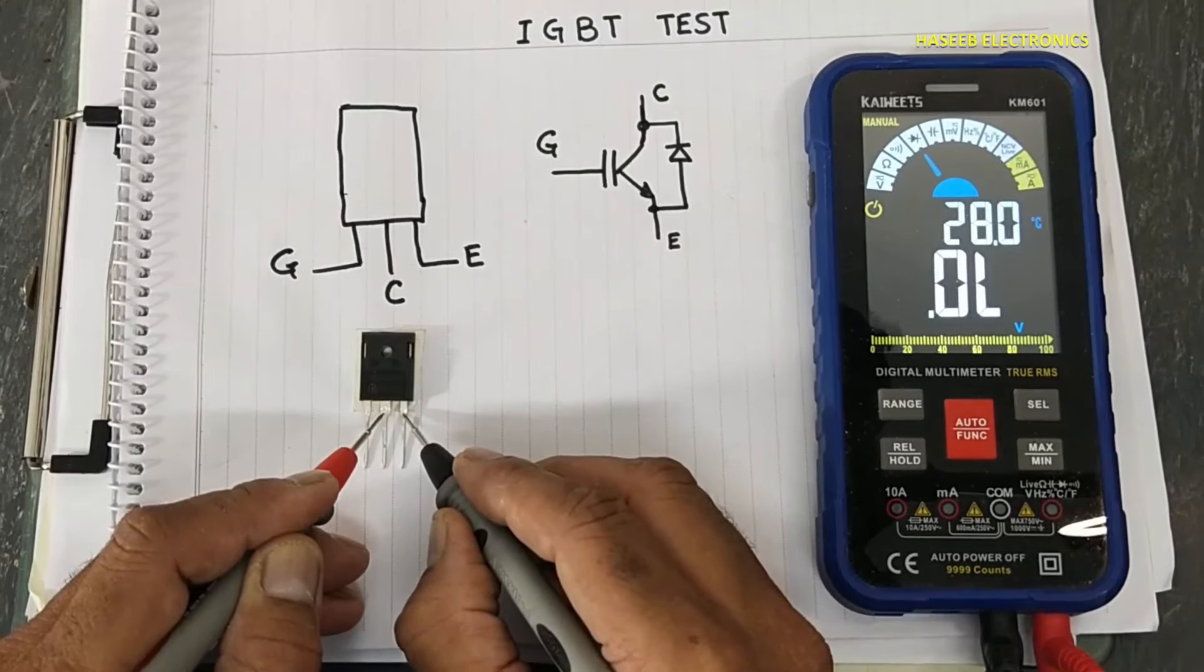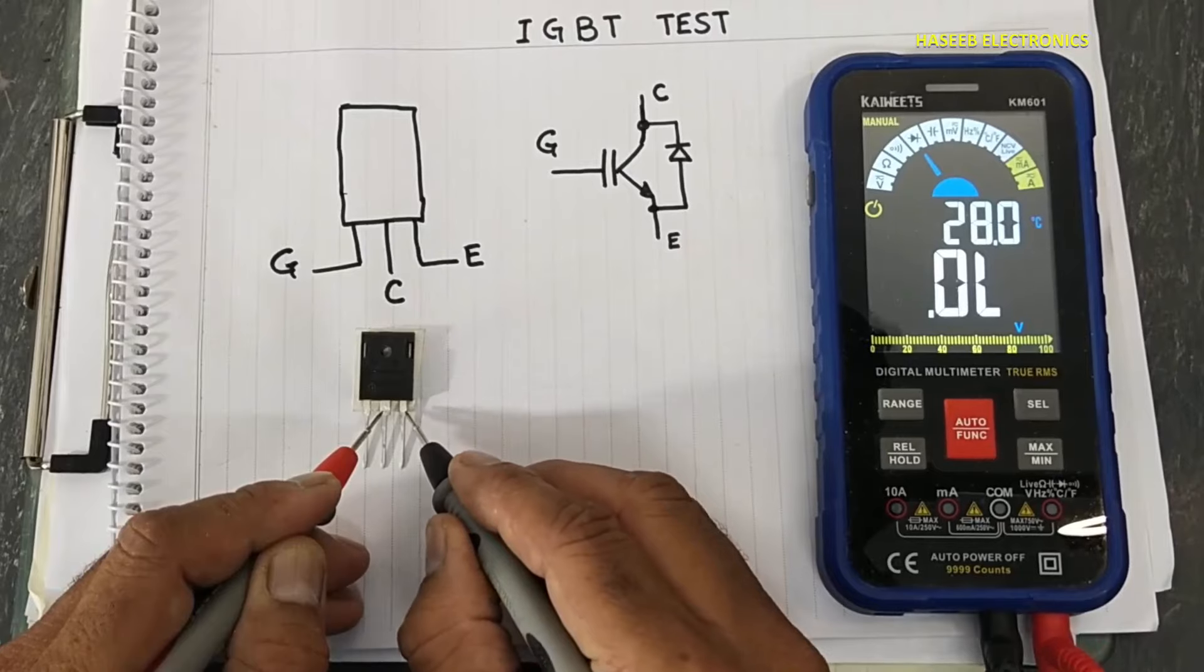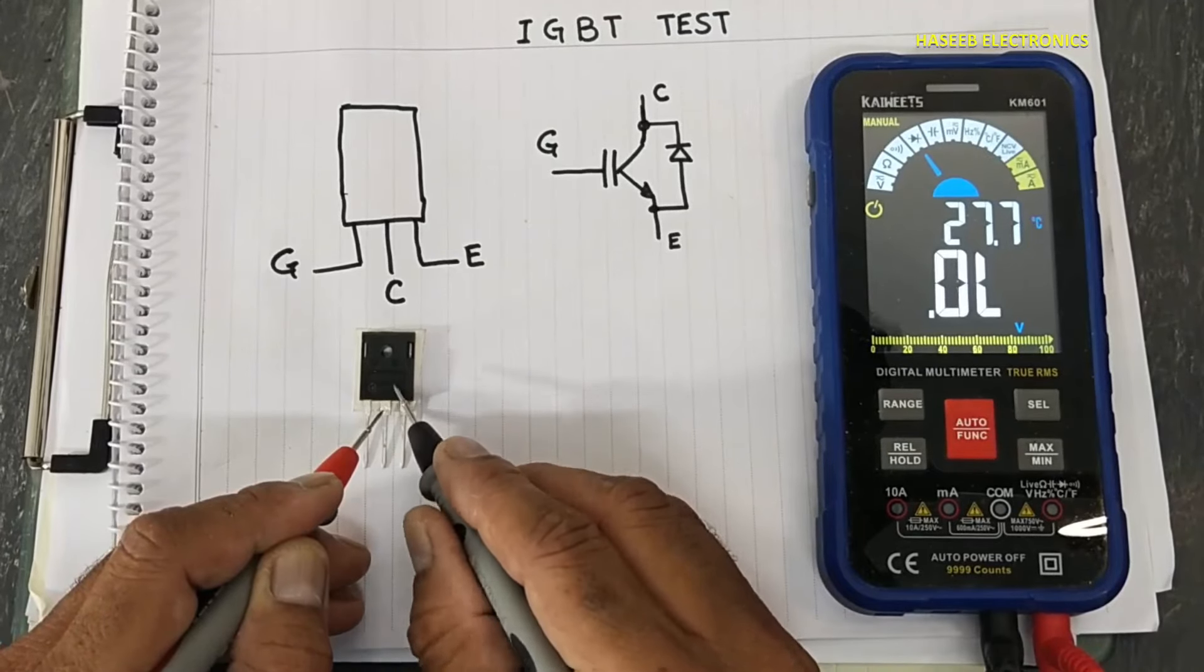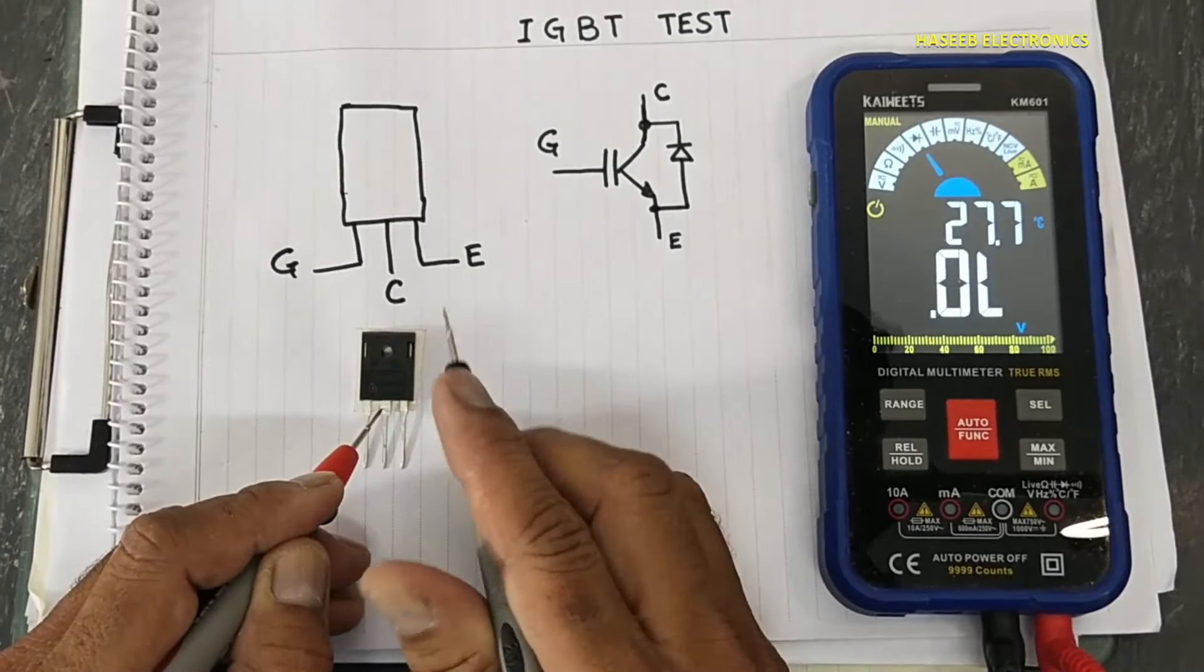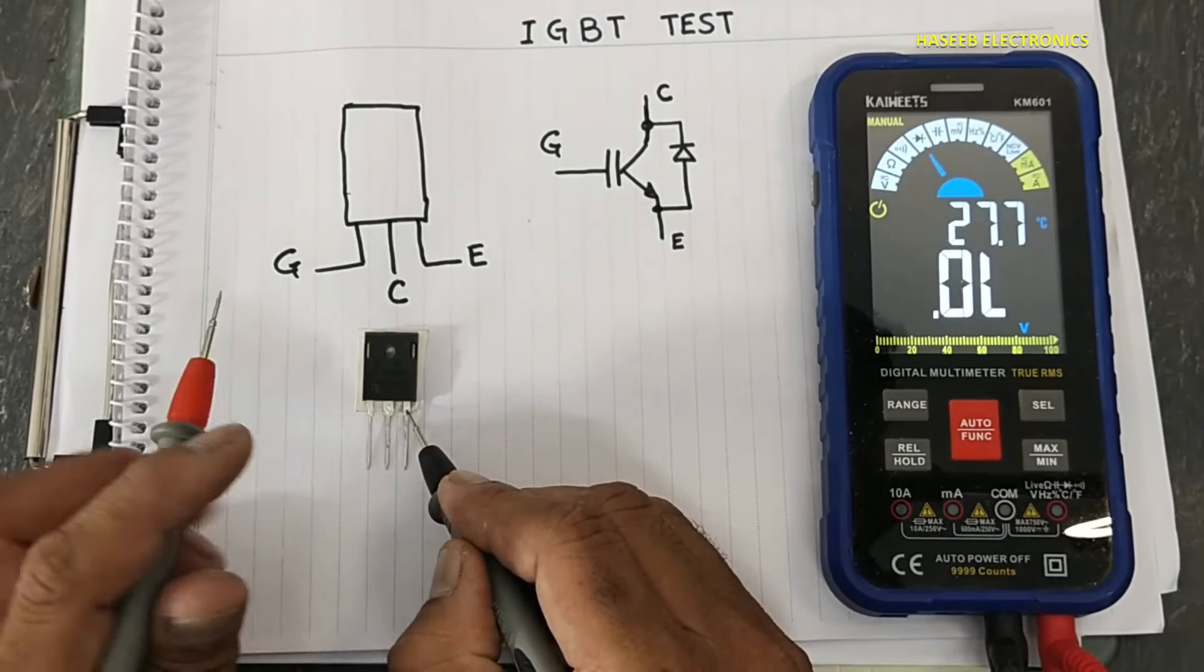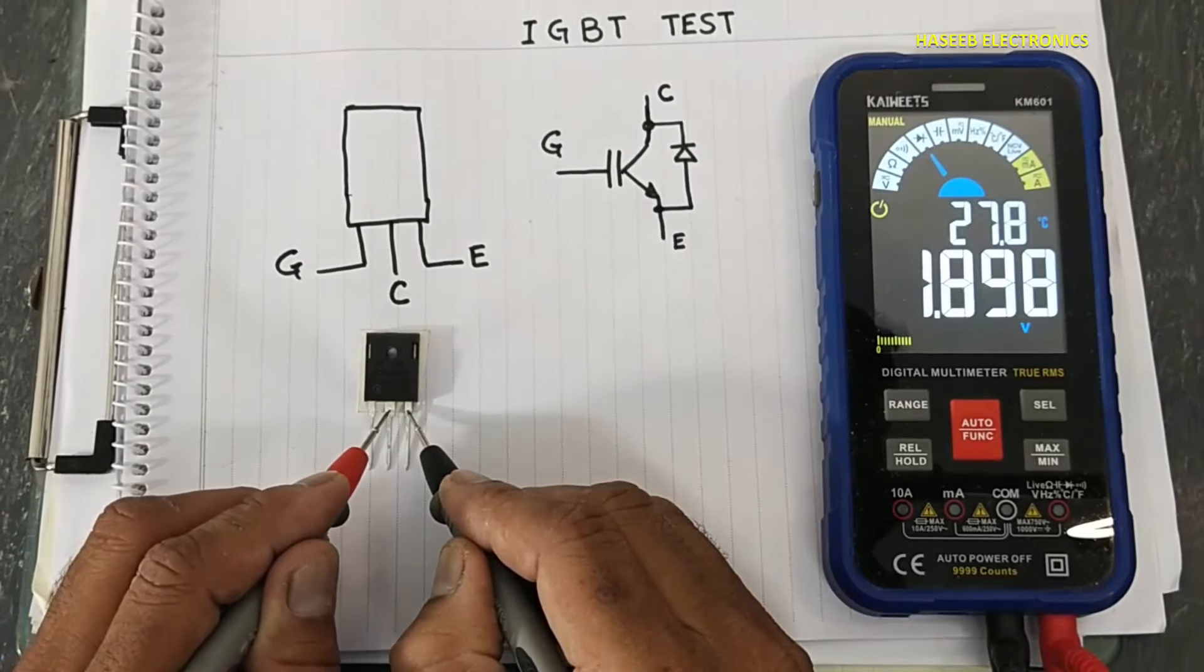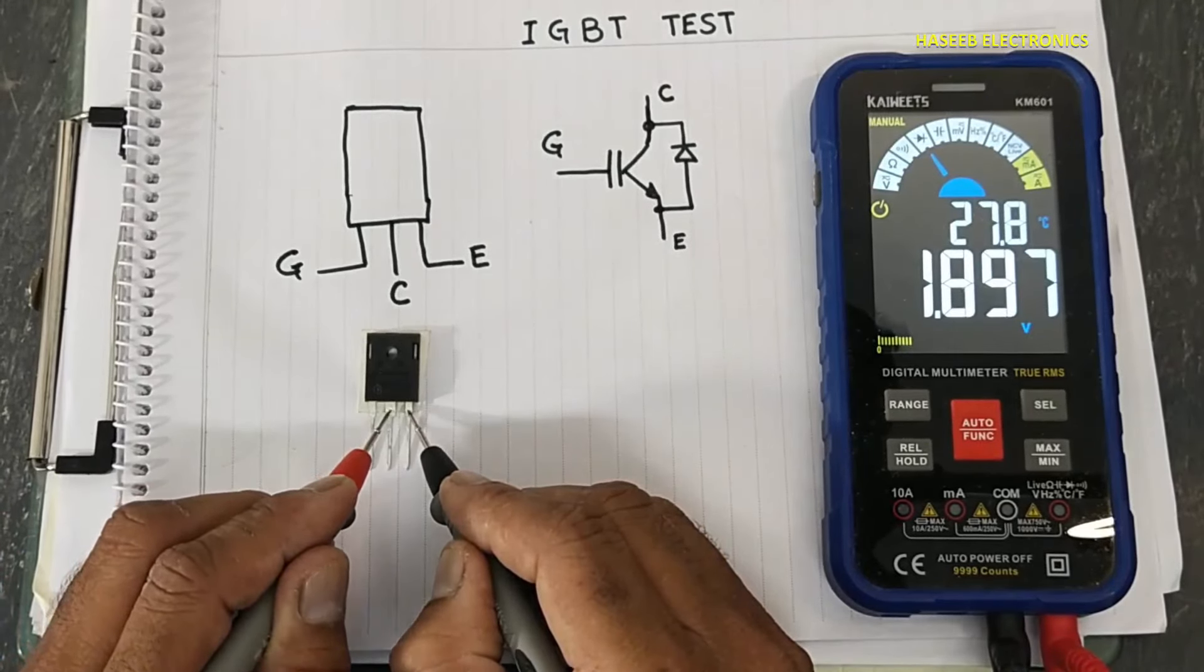If it is giving short circuit here, that time IGBT must be replaced. If we charge the gate like this - black lead at emitter, red at gate - and check here, if it is not turning on, that IGBT is bad.